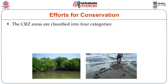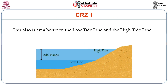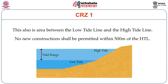The CRZ areas are classified into four categories. CRZ1 are the most ecologically sensitive areas, where geomorphological features play a role in maintaining the integrity of the coast. This includes mangrove forests, corals, sandy and rocky beaches, and biologically active mudflats. This is also the area between the low tide line and the high tide line. No new constructions are permitted within 500 meters distance from the high tide line.